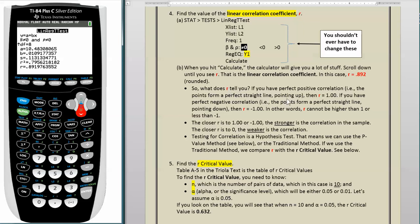So what does R tell you? If you have perfect positive correlation, that is, the points form a perfect straight line pointing up, then R equals 1. If you have perfect negative correlation, that is, the points form a perfect straight line pointing down, then R equals negative 1. In other words, R cannot be higher than 1 or less than negative 1. The closer R is to 1 or negative 1, the stronger is the correlation in the sample. The closer R is to 0, the weaker is the correlation.